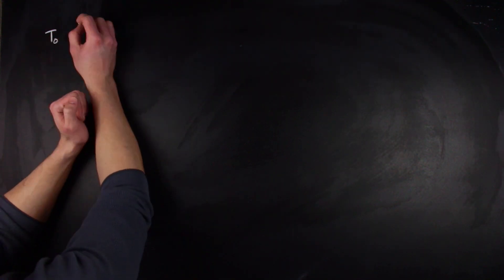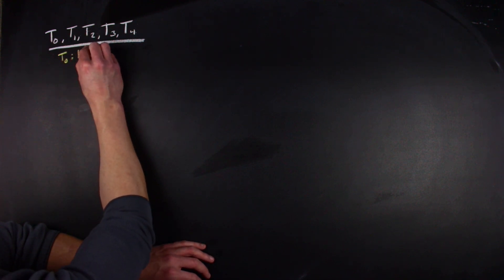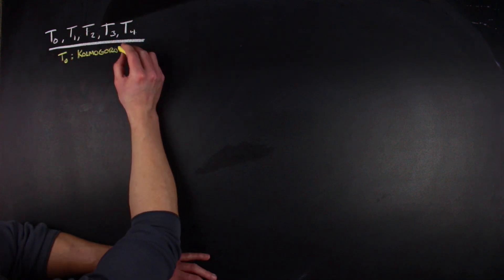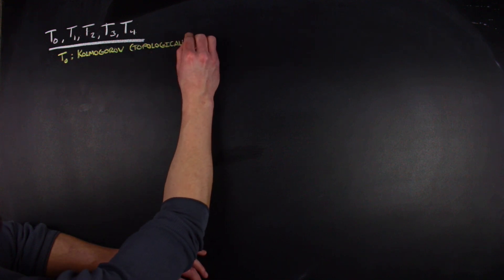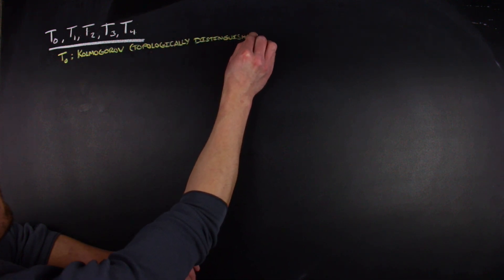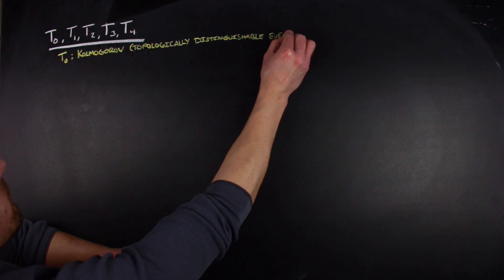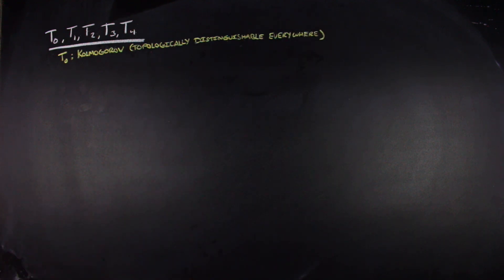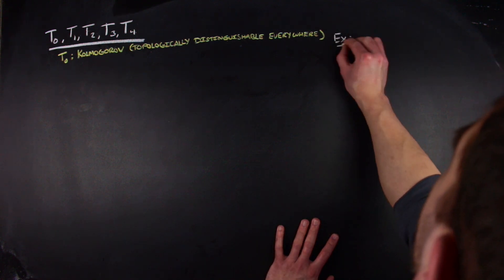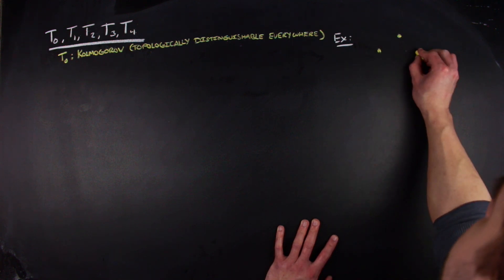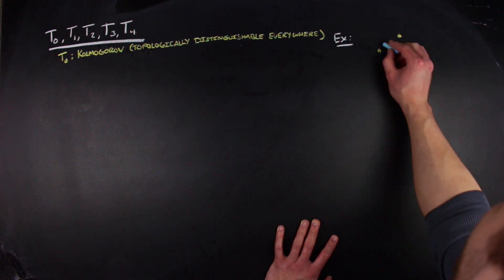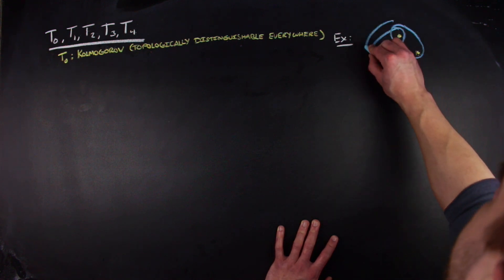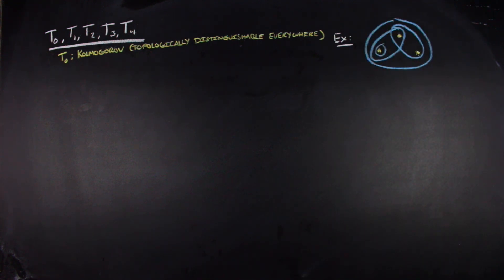With these ideas of separated and topologically distinguishable, we can now discuss the five usually-talked-about separation axioms: T0, T1, T2, T3, and T4. T0 is a Kolmogorov space — a space where all pairs of points are always topologically distinguishable from one another. In the example drawn here, each point is topologically distinguishable from the next. There is an intersection in the topology that isn't explicitly drawn, so just keep that in mind.